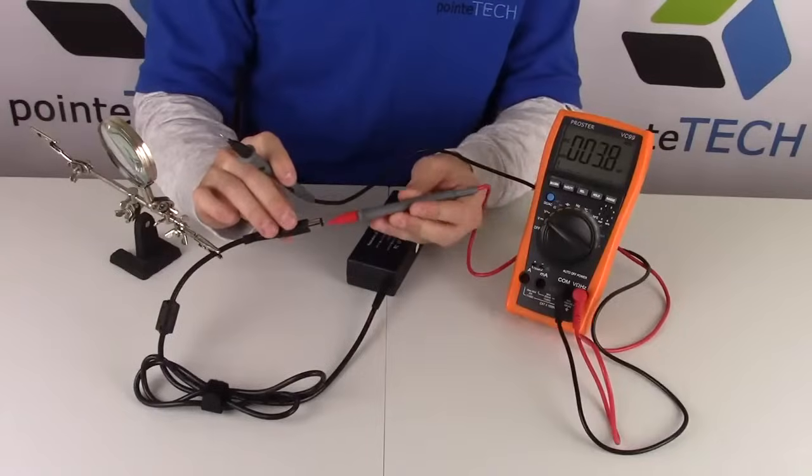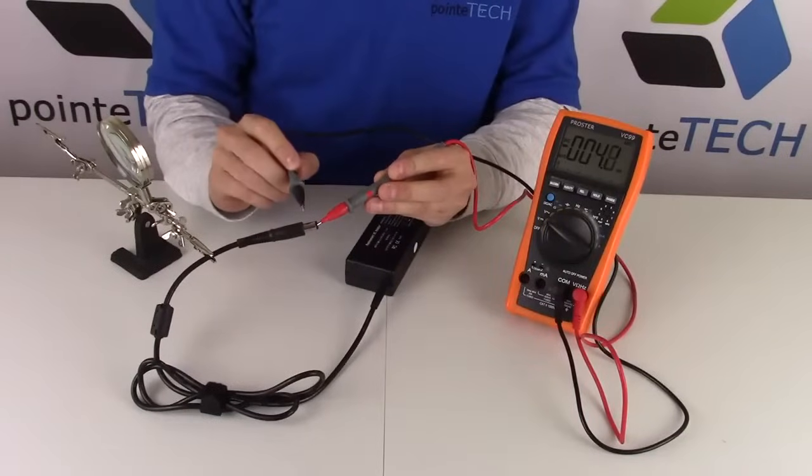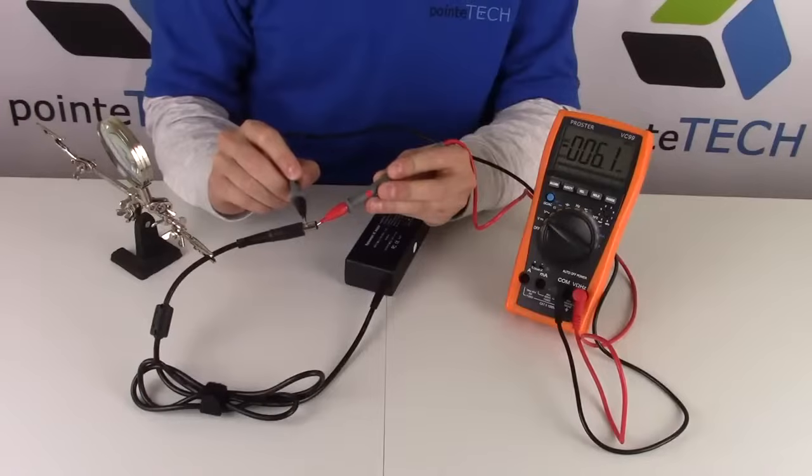We're going to put the red prong into the charger, touch that metal wall, and we're going to put the black one on the outside of the charger, touching the metal wall.